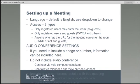The last section on that screen is your audio settings. If you need to include a bridge number or anything like that for people to call in, you can put that information there. The other option is "Do not include audio conference" — if you don't have one, you can check that box, and people can use voice over IP on their computer without needing a phone number to log in.